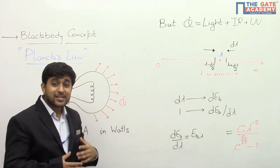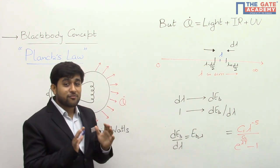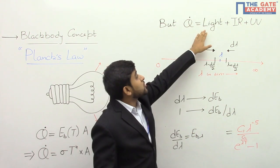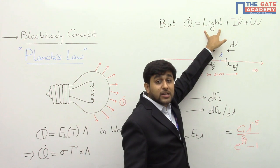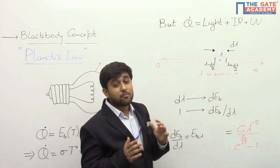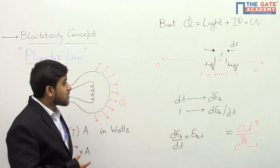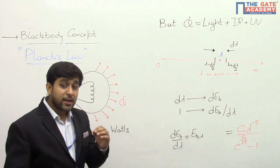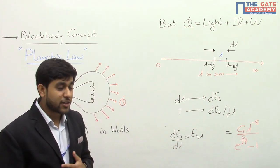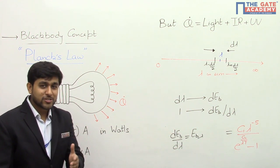Out of this 100 joules, the question is: what is the amount of light? Because the purpose of the bulb is to act as a light source, and only if we know the value of the light energy can we decide the performance of this bulb. This problem of finding out the energy corresponding to a particular wavelength band or a particular wavelength was solved by our hero Max Planck. Today we are going to discuss how to find out the energy corresponding to a particular wavelength or a particular wavelength range.